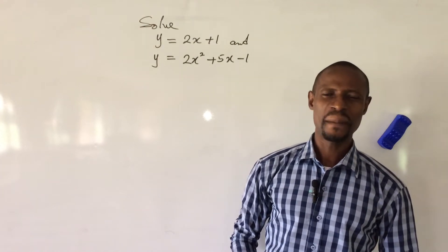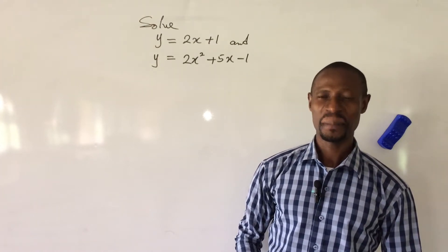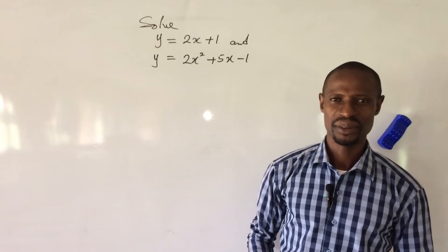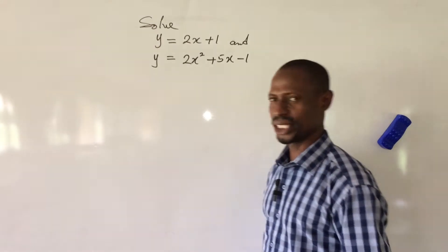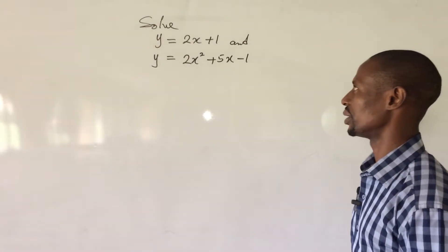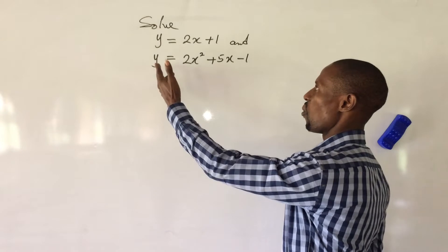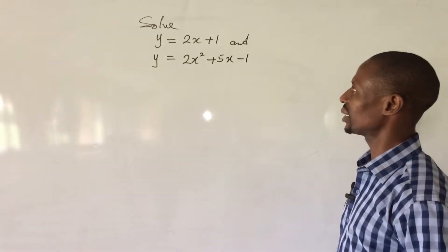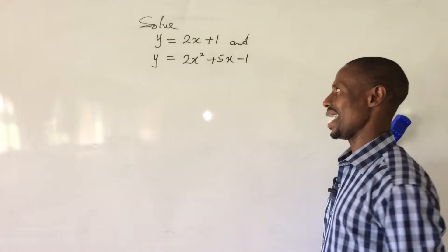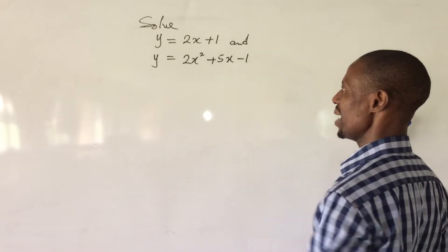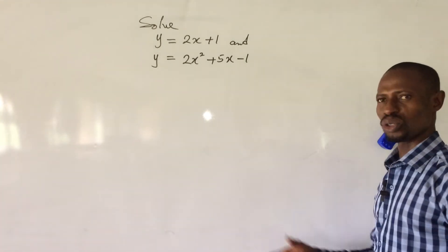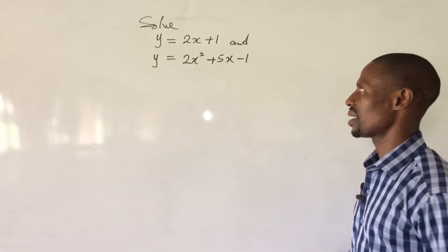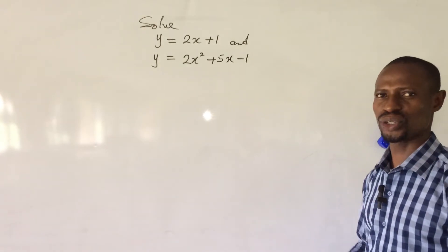Welcome to Online Mass TV, my name is Jake's Animal and today we have a little challenge on the board. It says solve y equal to 2x plus 1 and y equal to 2x to the power of 2 plus 5x minus 1.